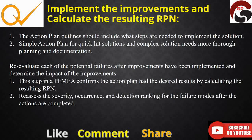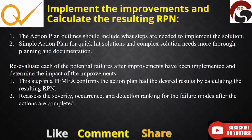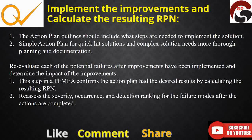When implementing improvements and calculating the resulting RPN, the action plan should include what steps are needed to implement the solution. Simple solutions need a straightforward action plan, while complex solutions require more thorough planning and documentation. Once improvements are implemented, we need to recalculate the RPN and reassess the severity, occurrence, and detection rankings for each failure mode after actions are completed.